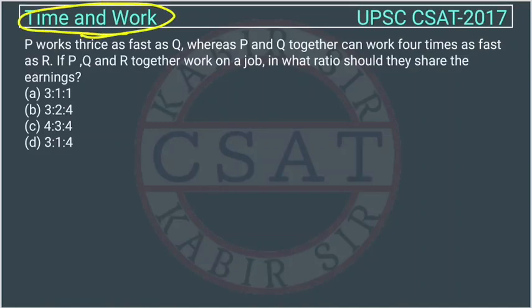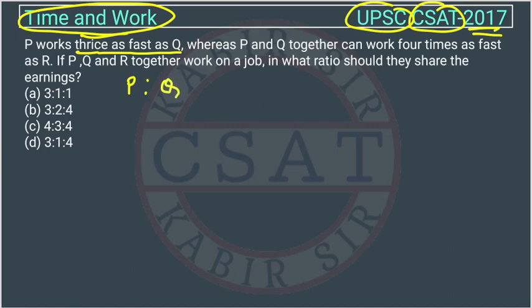This is a question of time and work asked by UPSC in the CSET paper of 2017. P works thrice as fast as Q. What is given — the efficiency is given. In this type of question, it is better if we write like this, because P is working thrice as fast as Q.